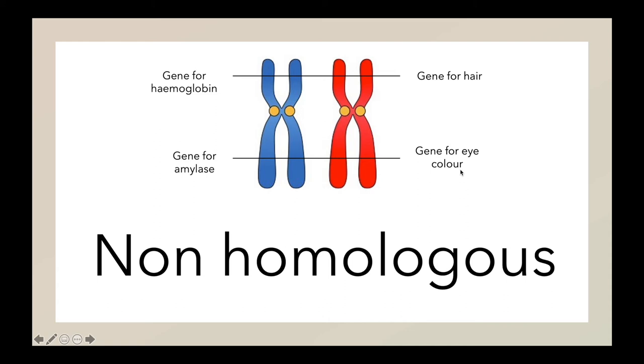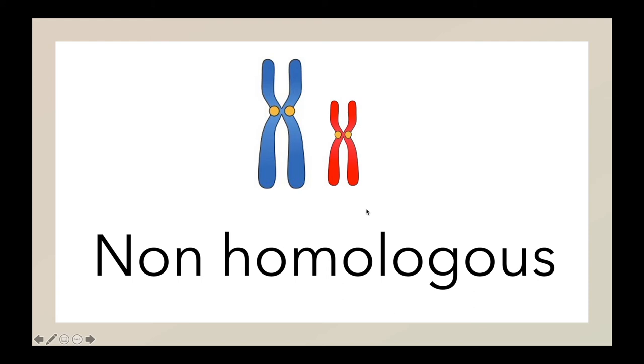This is also an example of a non-homologous chromosome, simply because the two chromosomes do not have the same structure.